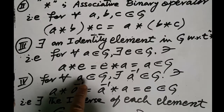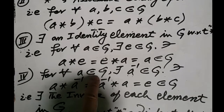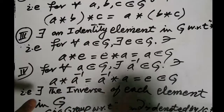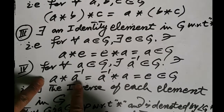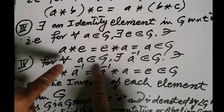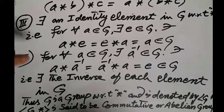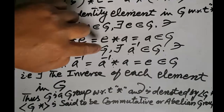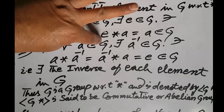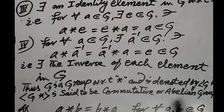The last condition for a group is that for each element a belonging to G, there exists its inverse in the set G, such that a star a-inverse is equal to a-inverse star a is equal to e. That is, the inverse element of each element of G exists in the set G.